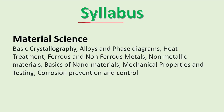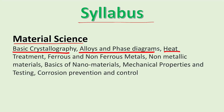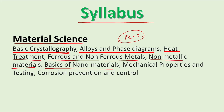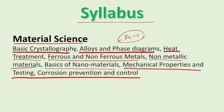Now let's talk about the syllabus, which is on material science. The syllabus covers basic crystallography, alloys and phase diagrams — mainly the FEC iron and carbon equilibrium diagram — then heat treatment, ferrous and non-ferrous metals, non-metallic material, basics of nano material, mechanical properties and testing, and corrosion prevention and control. This is completely the ESE syllabus.